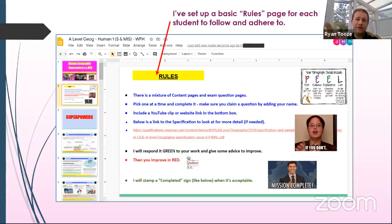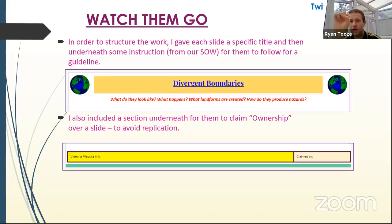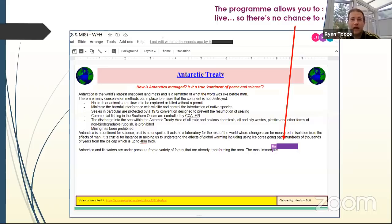There's a mixture between content pages and exam question pages. Each different slide has a particular topic based on the scheme of work, with a few questions in red for students to answer so they know what to put in. At the bottom of each slide there's a section encouraging further reading with website or video links, and in the bottom right corner they must claim ownership of that slide — we try to get them to claim only one slide at a time.